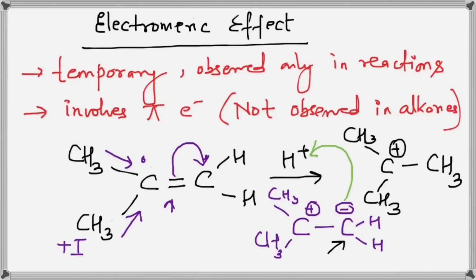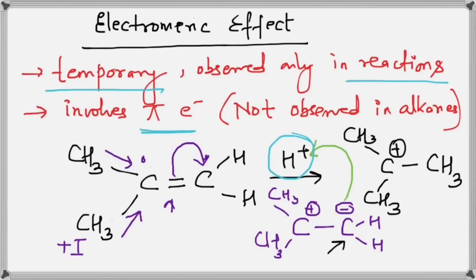Looking at this again, the key points to note are: this process happened only because of the presence of H⁺, and therefore it is a temporary effect shown only in reactions. The second point is that the electrons that shifted are the pi electrons. So the electromeric effect is only shown by groups that have a double bond or a triple bond.